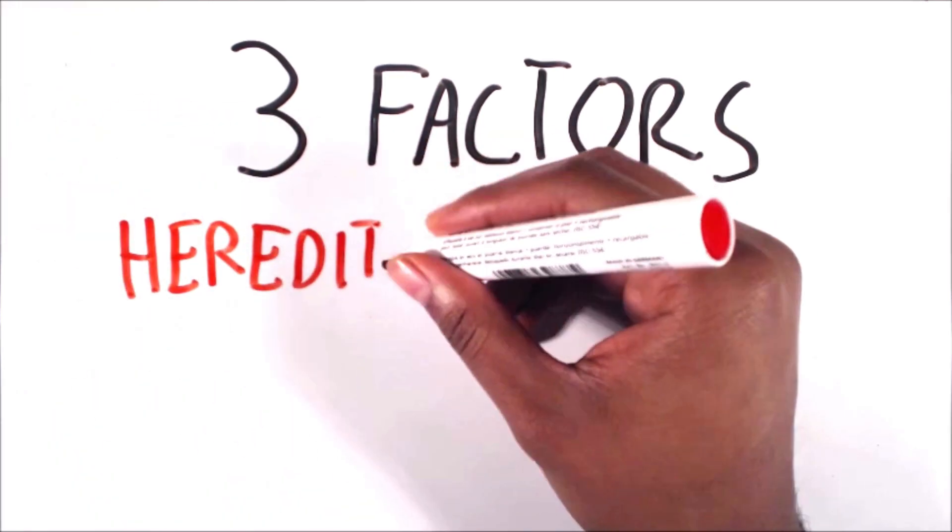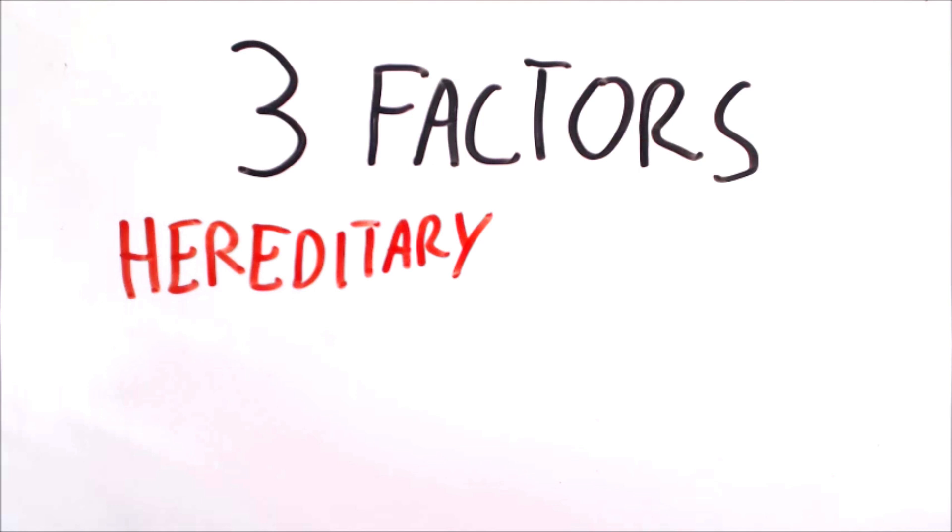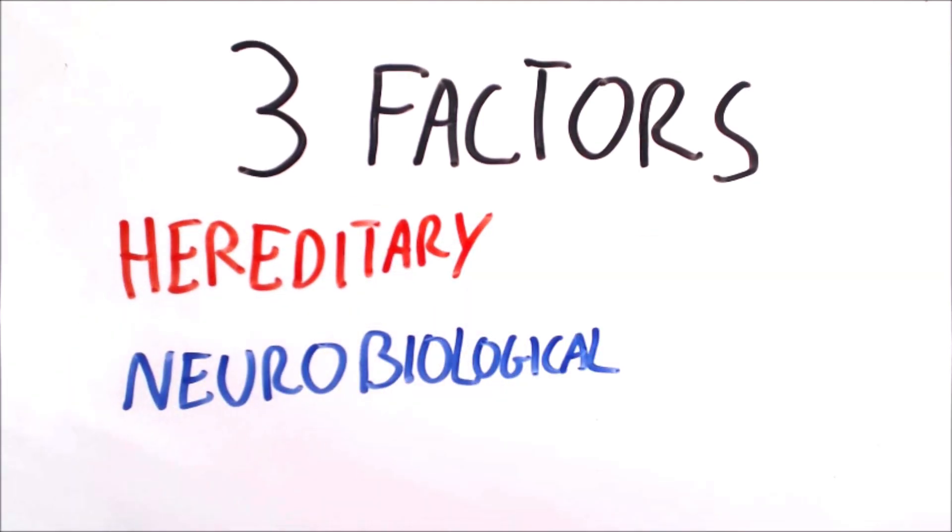The first of these is heredity. Children whose parents have ADHD are more likely to have the disorder. The second is having a neurobiological disorder. This increases the chances of developing ADHD.